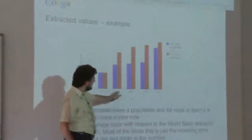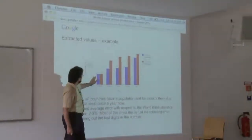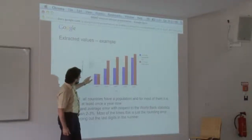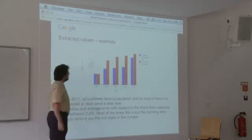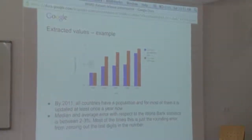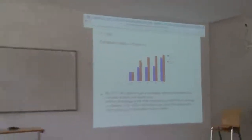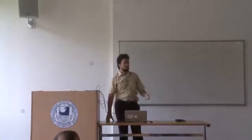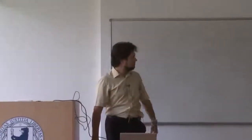Another example: for country population, from 2005 to 2009, taking the list of countries from the World Bank, by 2009 already 100% of countries have a population attribute, and more than 90% have this value updated yearly. Comparing these values with those provided by the World Bank, the error rate of Wikipedia attributes is only between 2 and 3%, and in most cases it's just that the user rounded the number to an exact number of millions rather than the full value.